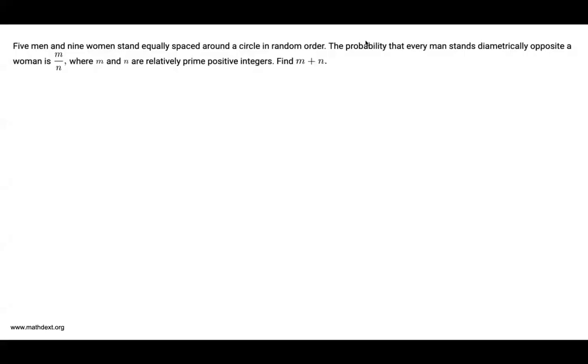This is problem 1 of the 2023 AMC 1. The problem reads: Five men and nine women stand equally spaced around a circle in random order. The probability that every man stands diametrically opposite a woman is m over n, where m and n are relatively prime positive integers. Find m plus n.